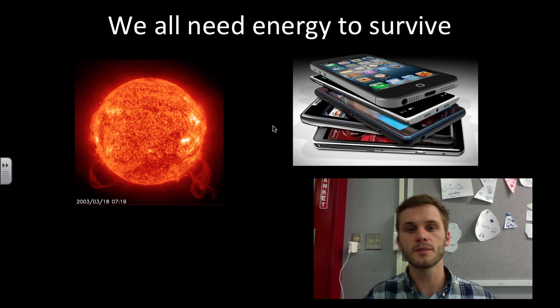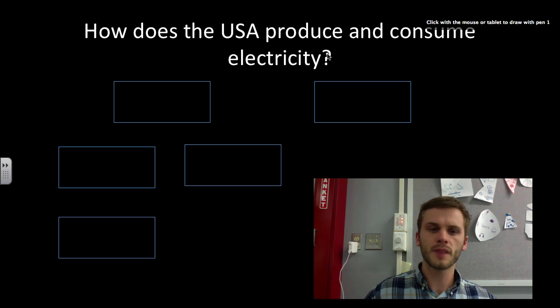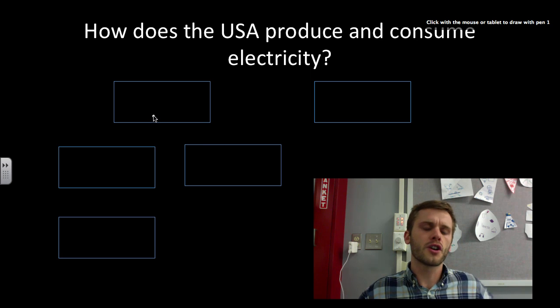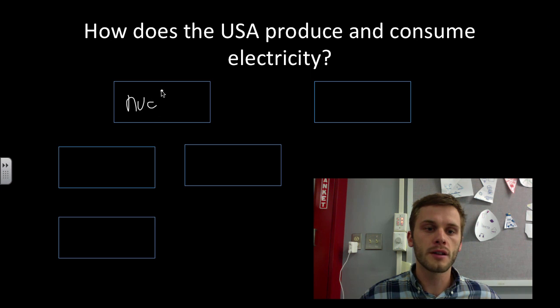I think a nice easy system to start us off would be electricity and how electricity is produced and consumed in the United States. First, let's look at how energy is produced. There's so many ways it's produced, so we're just going to use two examples. One way is nuclear power. Another way that's a little more green might be solar power. These are just two examples of how electricity is produced in the United States.